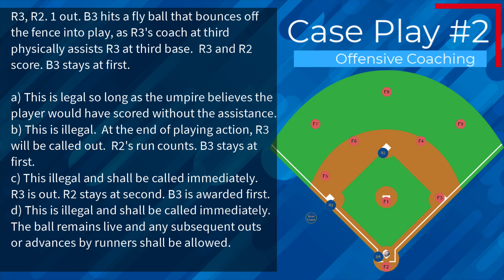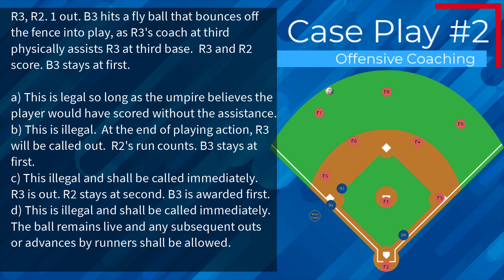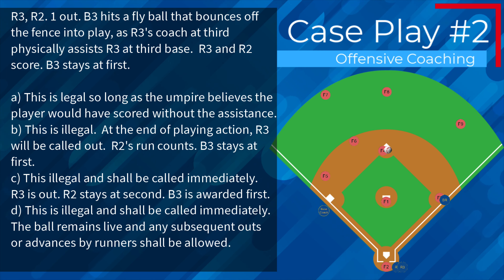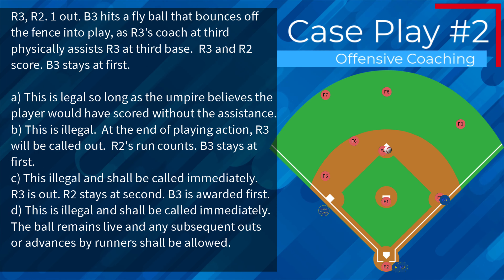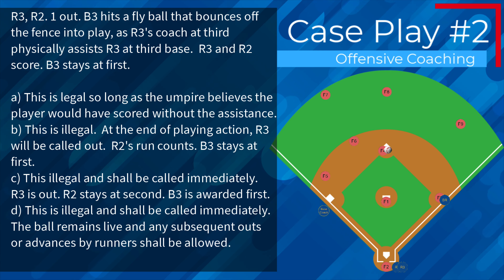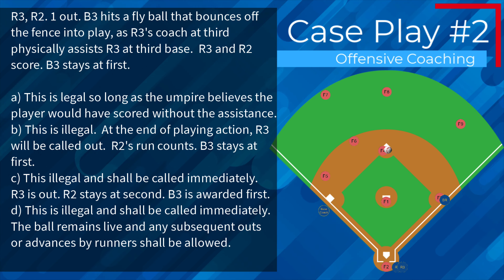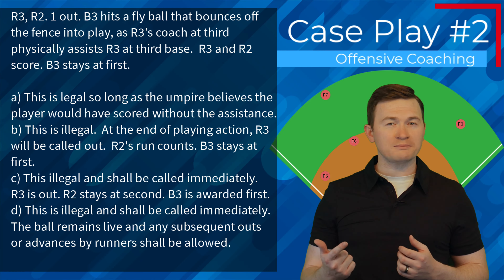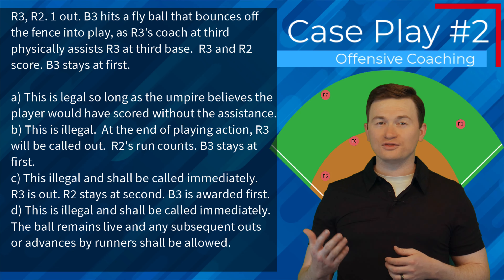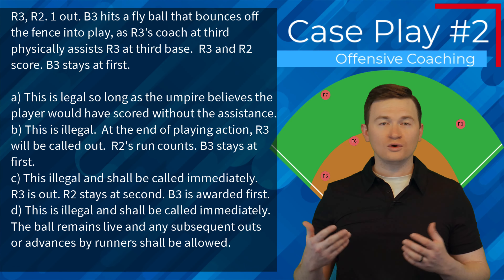Case play number two: runners on second and third with one out. B3 hits a fly ball that bounces off the fence into play. As R3 rounds third, the coach at third physically assists R3 at third base. R3 and R2 score, B3 stays at first. Is this A, legal so long as the umpire believes the player would have scored without assistance; B, illegal — at the end of playing action R3 will be called out, R2's run counts, B3 stays at first; C, illegal and she'll be called immediately, R3 is out, R2 stays at second, B3 awarded first; or D, illegal and she'll be called immediately, the ball remains live and any subsequent outs or advances by runners will be allowed? The correct answer is D — this is illegal, it's an immediate out, but the ball does remain live so all other playing action that occurs will be allowed.